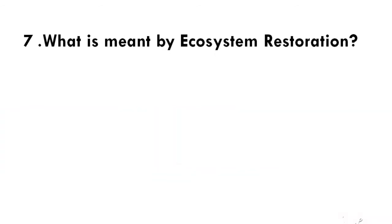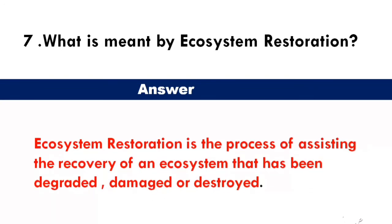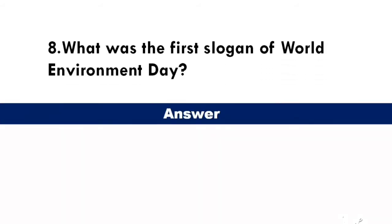What is meant by ecosystem restoration? Answer: ecosystem restoration is the process of assisting the recovery of an ecosystem that has been degraded, damaged, or destroyed. What was the first slogan of World Environment Day? Answer: only one earth.